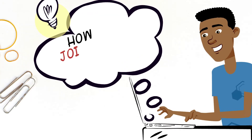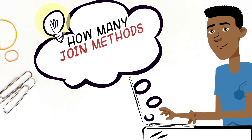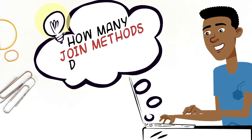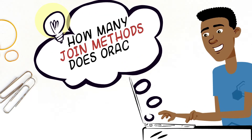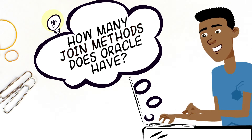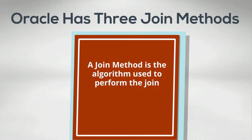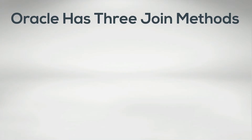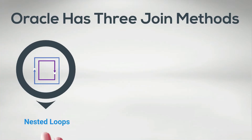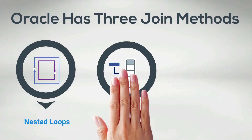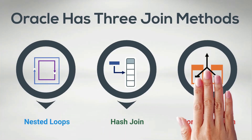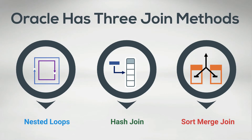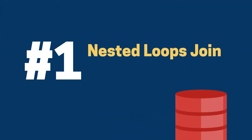How many join methods do you think we have? It turns out we have three. There are a lot more join types that we'll talk about in a moment, but there's really only three join methods Oracle uses: nested loops, hash join, and sort merge join.